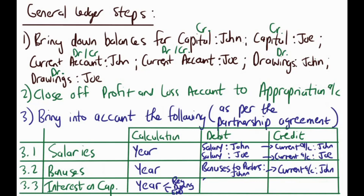For step 3, I'm going to debit the interest on capital account and credit current account John. So: debit interest on capital, credit current account John, and then do the same for Joe. Note that with interest on capital we don't write 'interest on capital John' or 'interest on capital Joe' — as an accounting convention we don't really do that. That's basically what we do in step 3, and on the next page we move on to step 4, which is quite a significant step.